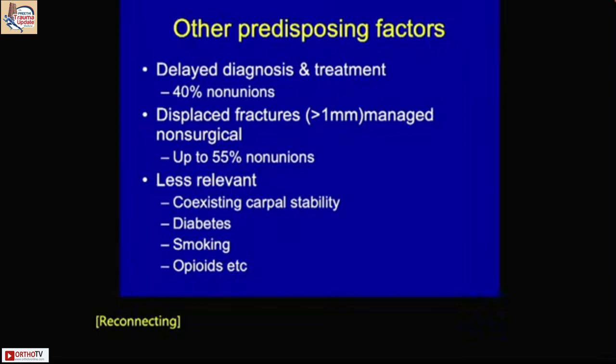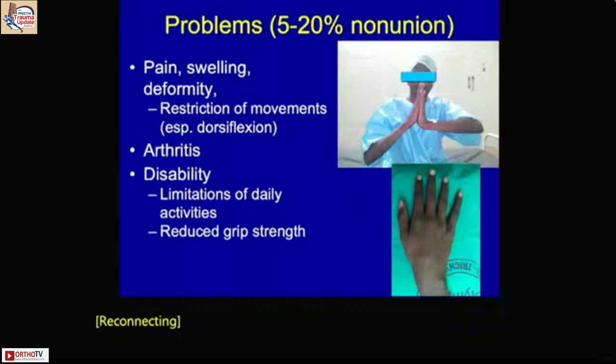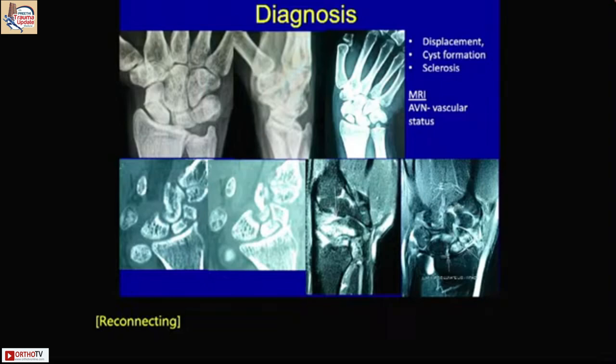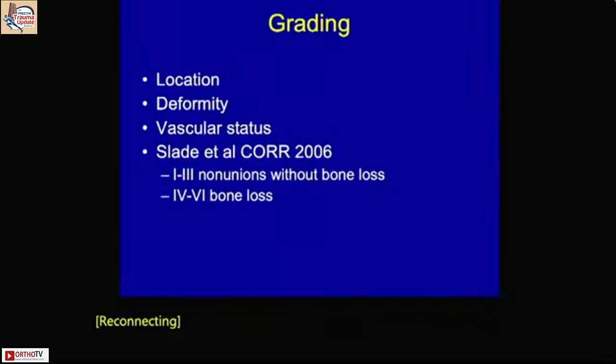The cause could be a displaced fracture or other comorbidities like delayed diagnosis and treatment. The problem affects only 5 to 20% of patients, who present with pain, restriction of movement, and limitation of activities. X-rays, MRI, and CT scans are helpful in diagnosing these cases. CT helps understand the trabecular pattern, and MRI helps differentiate whether patients have AVN or not.